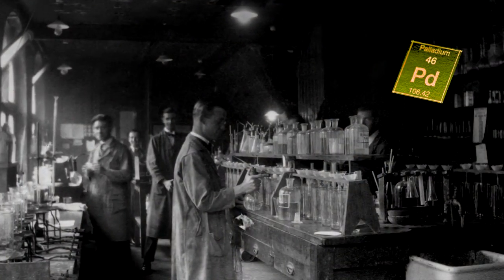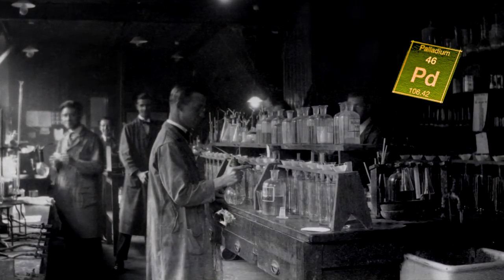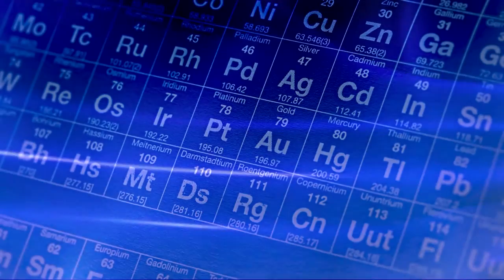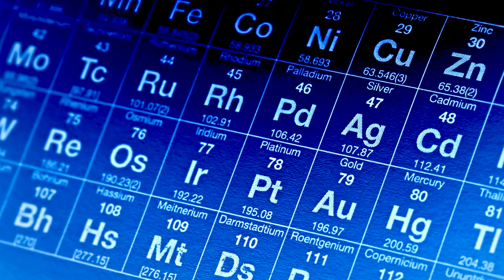Palladium has been precipitated for over 90 years using dimethylglyoxime, DMG. The other platinum group metals require very complex chemical reactions.